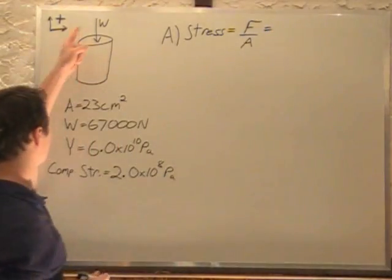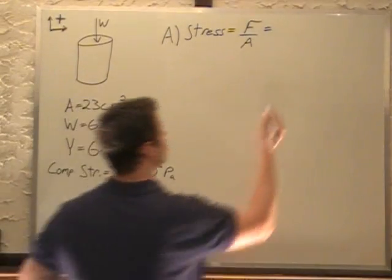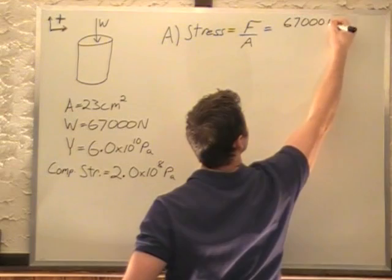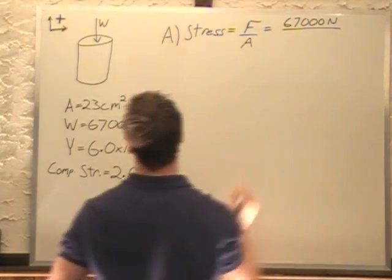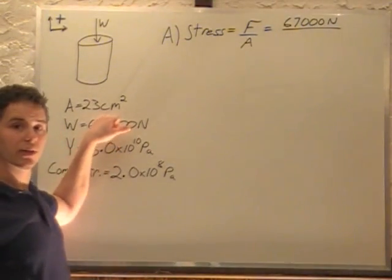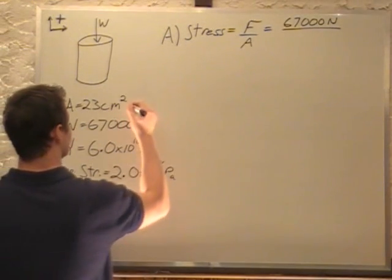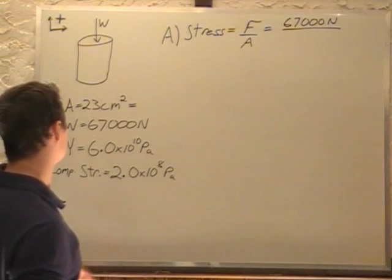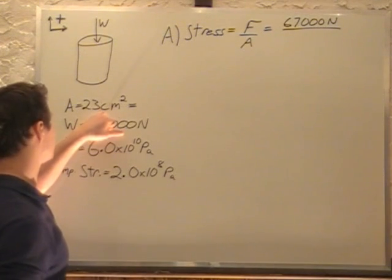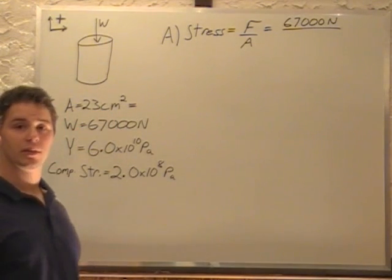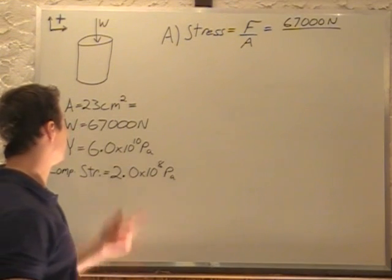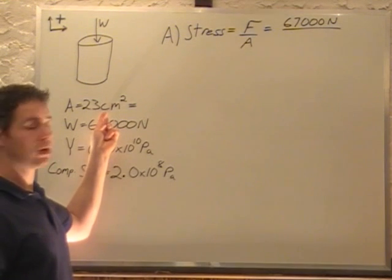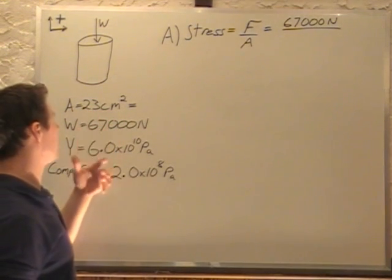The force that's pushing down is equal to this weight which is 67,000 newtons divided by the area of the column. And the area is in centimeters squared. So we're going to convert this to meters squared. To do that we can either do our unit conversion or we can just look at the centimeters. We know that there's 100 centimeters per meter. And this is squared. So basically what I do is just square the centa. This is times 10 to the minus 2. So this whole thing becomes times 10 to the minus 4.